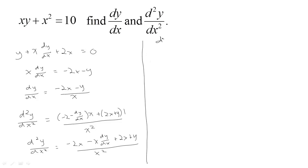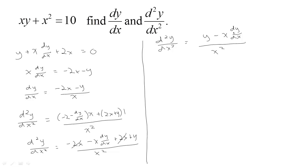Combining like terms, we have a negative 2x and a positive 2x that cancel, so the second derivative simplifies to (y - x·dy/dx) / x². However, this expression is in terms of x, y, and also dy/dx, so it would be nicer to get rid of that dy/dx. We can do that by substituting in what we know dy/dx equals.